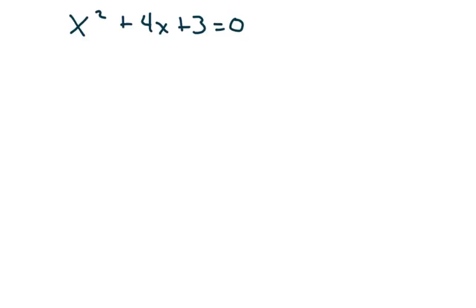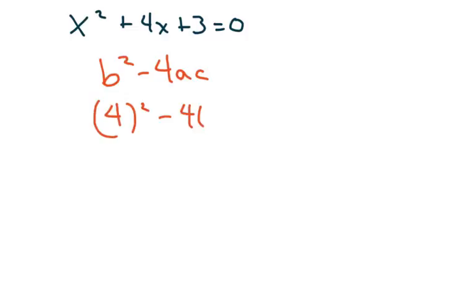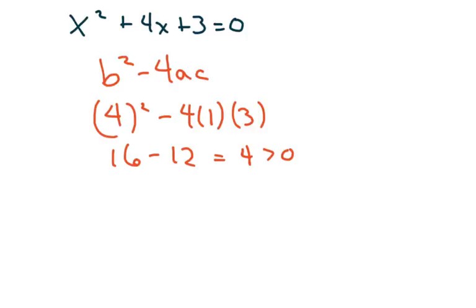Next example: we compute b² minus 4ac where b is 4, so we have 4 squared minus 4 times 1 times 3, which is 16 minus 12, equaling 4. Since 4 is positive, we have two real solutions.